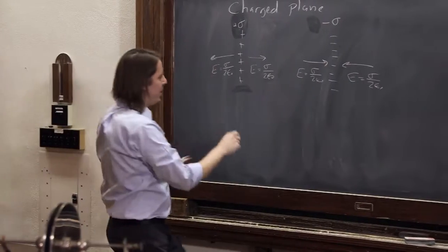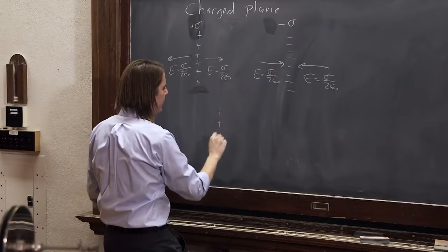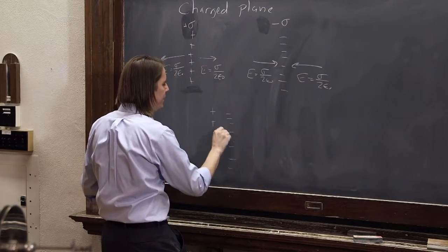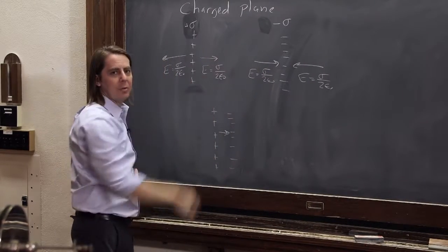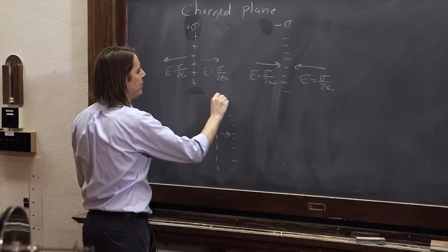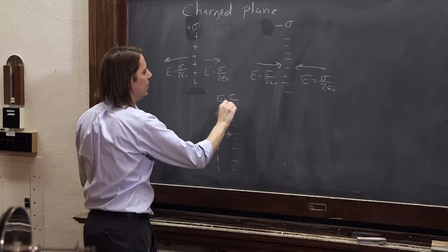We used that, and we brought them together really close so that they really do act like infinite planes, then the E field on the inside is just the sum of these two, because they're in the same direction. So that's why the E field for the capacitor is sigma over epsilon naught.